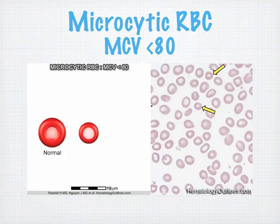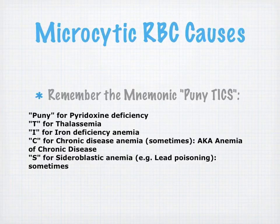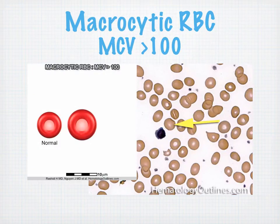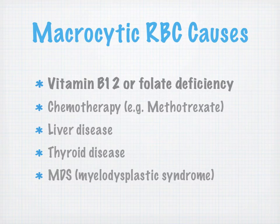Microcytic RBC causes — a mnemonic 'puny ticks': P for pyridoxine deficiency, thalassemia, iron deficiency, chronic disease anemia, and sideroblastic anemia or lead poisoning. Macrocytic RBCs have an MCV above normal. Macrocytic RBC causes include megaloblastic anemia and others.